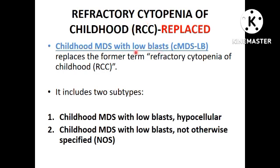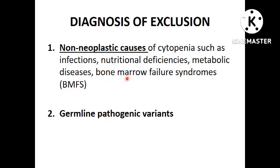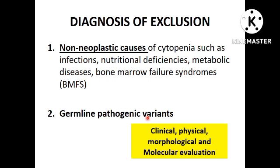Childhood MDS with low blast replaces the former term refractory cytopenia of childhood, subdivided into childhood MDS with low blast hypocellular and childhood MDS with low blast not otherwise specified. Childhood MDS is a diagnosis of exclusion — you must rule out non-neoplastic causes of cytopenia such as infections, nutritional deficiencies, metabolic diseases, and bone marrow failure syndromes, as well as exclude germline pathogenic variants by NGS, requiring thorough clinical, physical, morphological, and molecular evaluation.